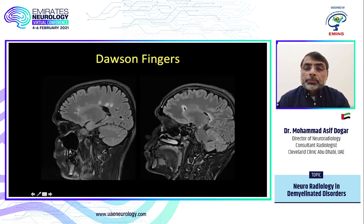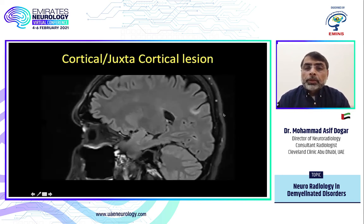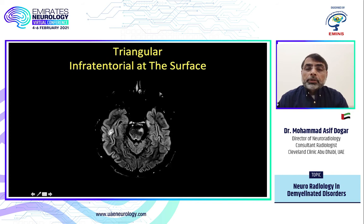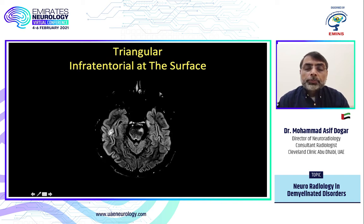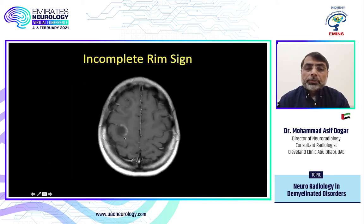Here is another lesion — periventricular, at right angle — these are called Dawson fingers. Here are more typical lesions along the calloseptal interface, quite specific for MS although they can be seen in some other disorders. We also have cortical or juxtacortical lesions. In the infratentorial or brainstem region, lesions are usually triangular and at the surface of the brainstem. You can also see a typical periventricular lesion along the temporal horn.